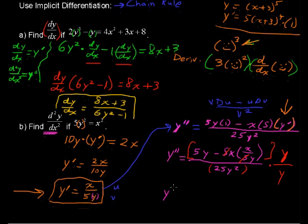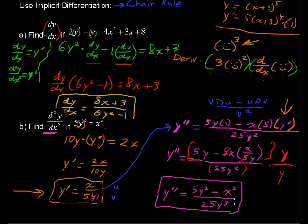We have y double prime equals y times 5y is 5y^2 minus x^2, and the y's will cancel. This is a y in the numerator and this is in the denominator. So minus just x^2 over 25y to the third. There we have it. Don't even think about canceling these y's here, because there's not a y in this term. This is the second derivative.